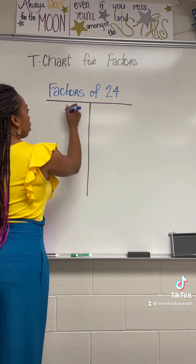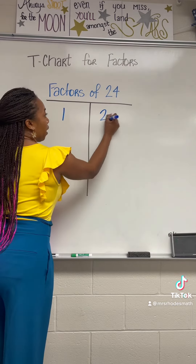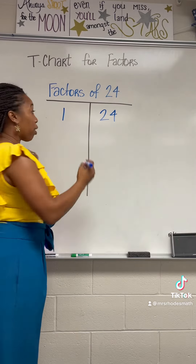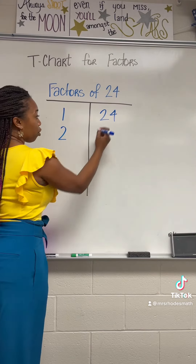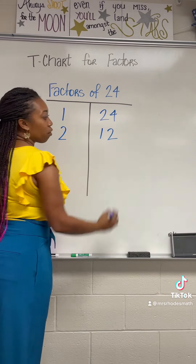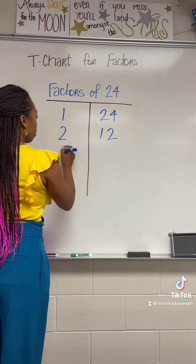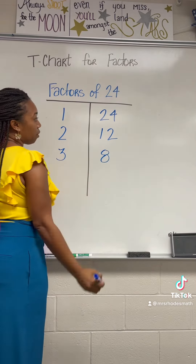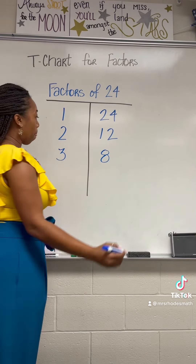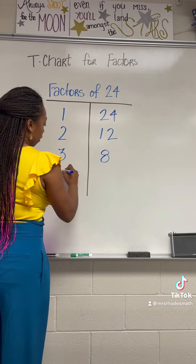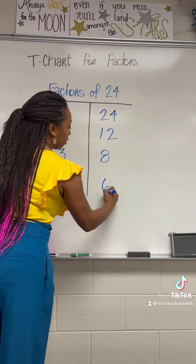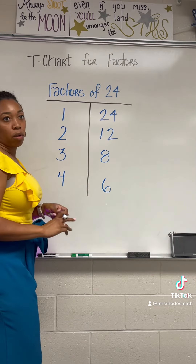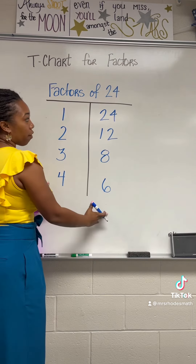What are my two factors? So I have 1 and 24. It's an even number, so I know that 2 is also a factor, so 2 and 12 make 24. 3 multiplied by 10 is 24. And 4 and 6 multiply together will give us 24. So this is a breakdown of all of the factors.